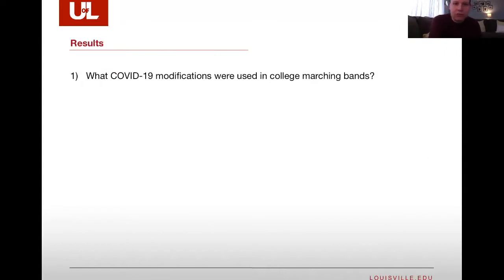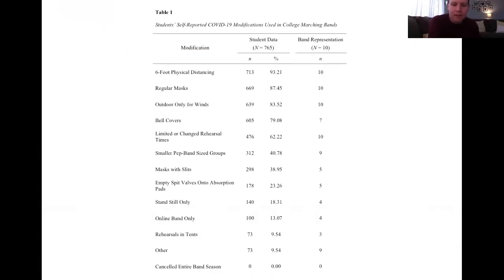What COVID-19 modifications were used in college marching bands throughout the country? Here you see table one and a list of modifications — 14 were included on the survey, and students could select as many as applied to their band. The most common was six-foot physical distancing: 93% of respondents indicated that modification was used. Going down the list: regular masks, outdoor only for winds. At the bottom, zero bands canceled the entire band season. Nine percent indicated other modifications related to a variety of aspects not included on the original survey.